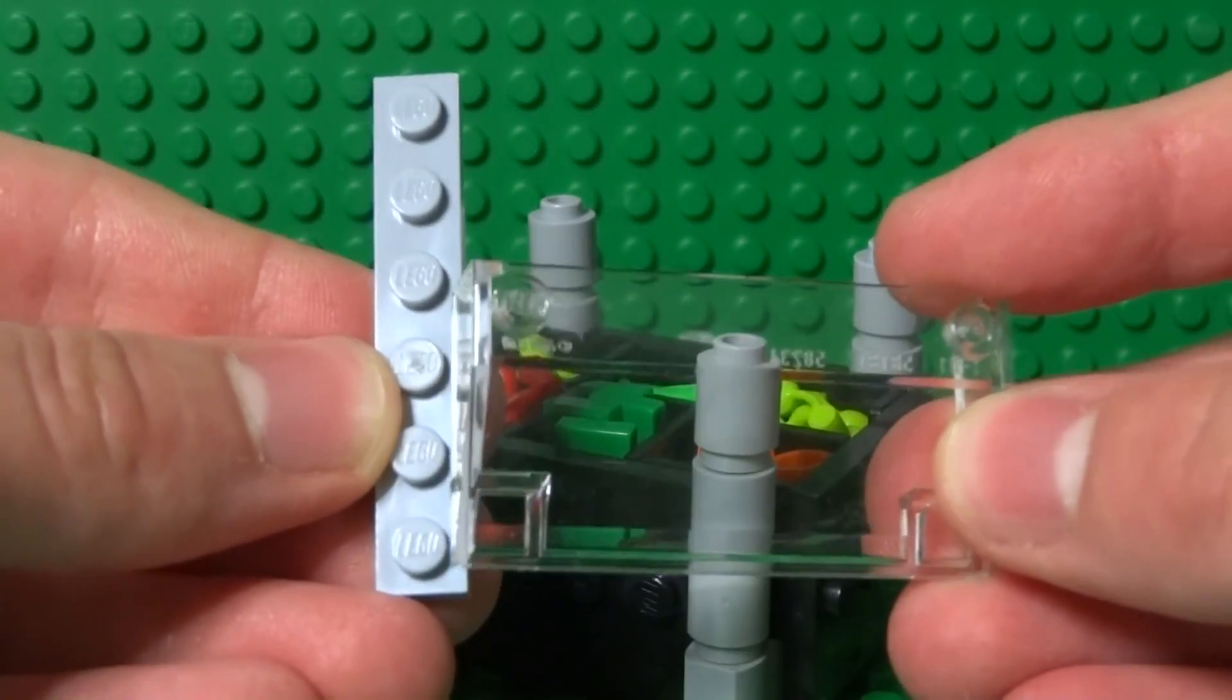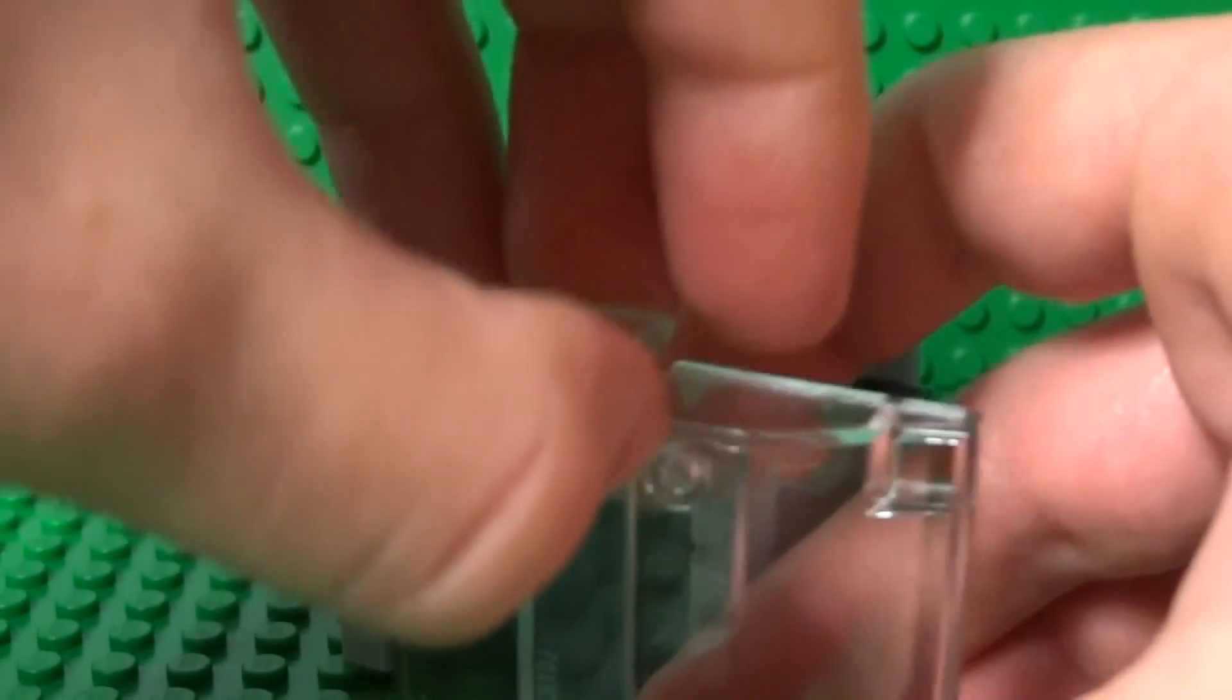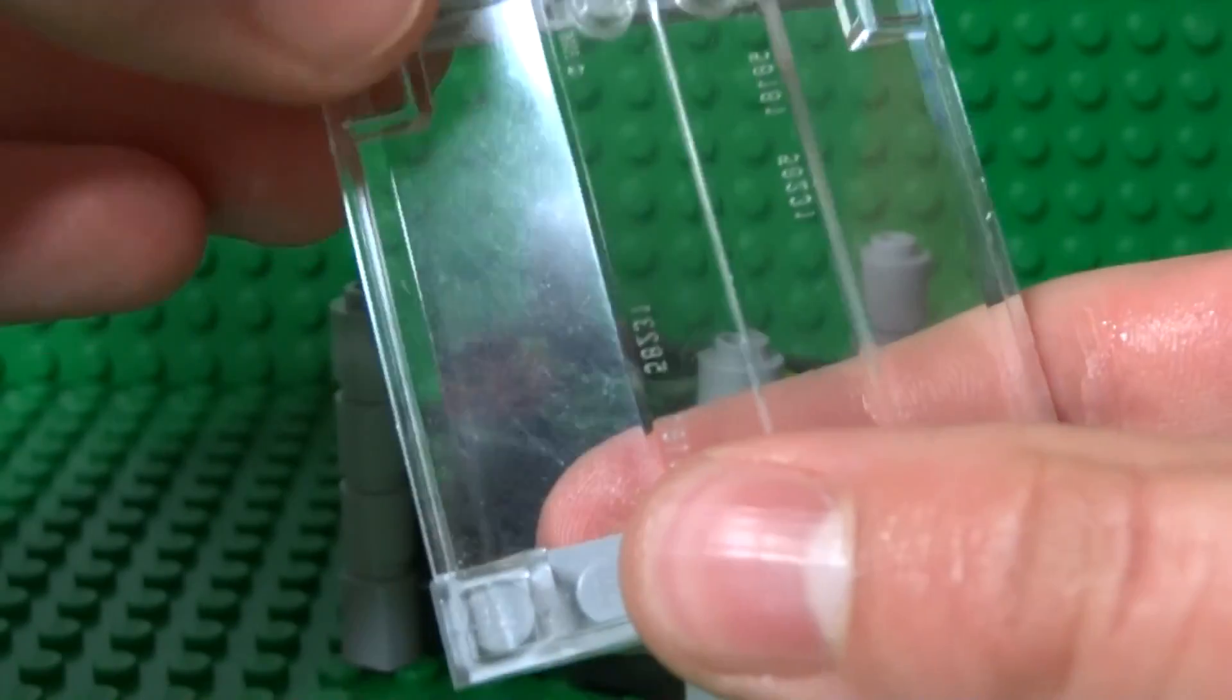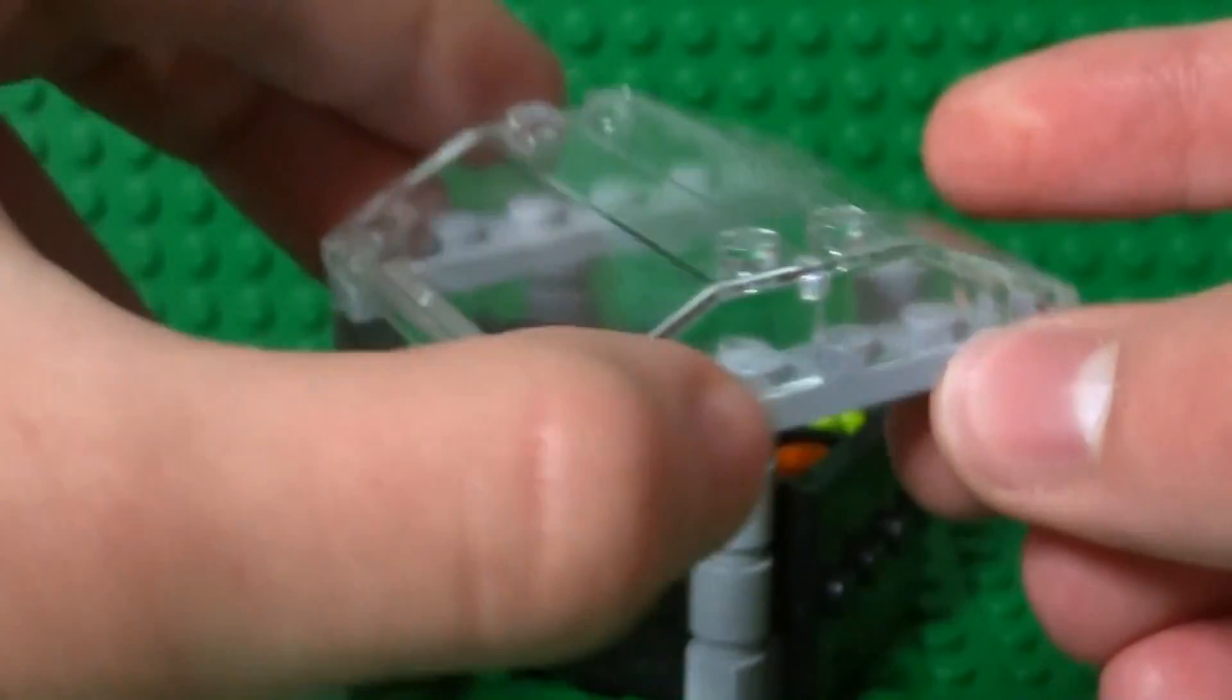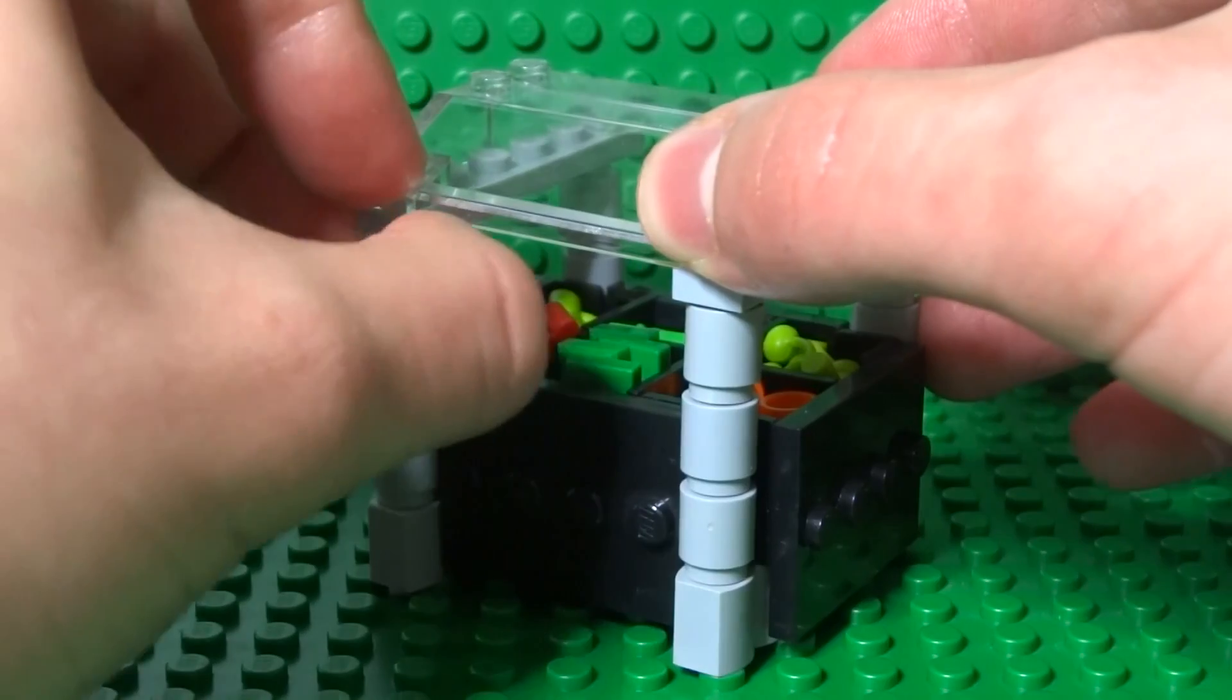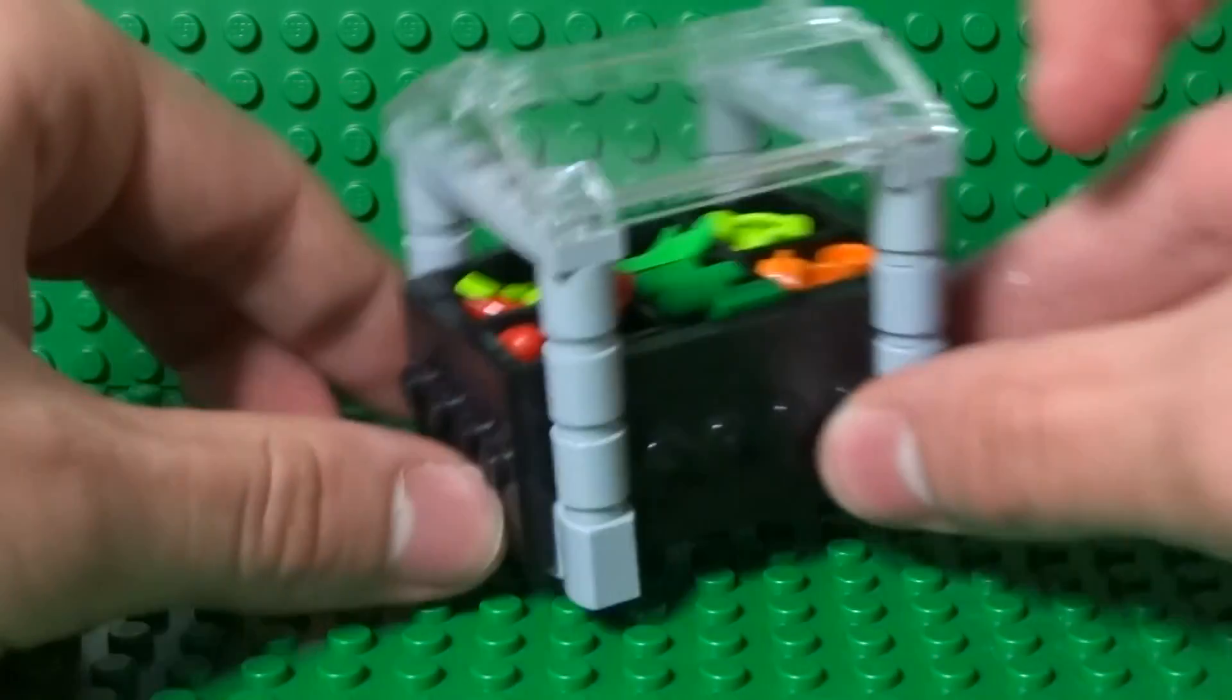So you take your two one by six plates and your windscreen pieces and just attach them together, forming a six by six slanted windscreen. And then just attach that to the top of your salad bar pretty simply. And there you go, you have your very own Lego salad bar.